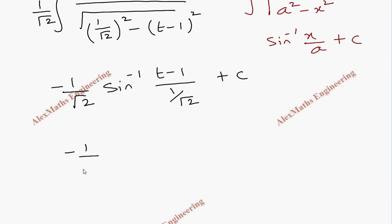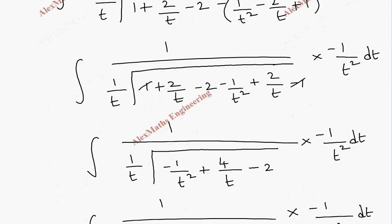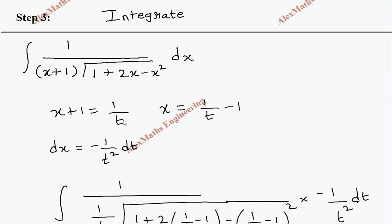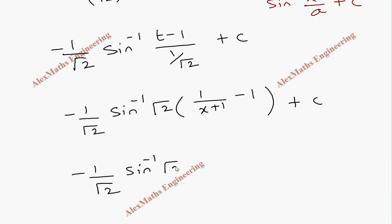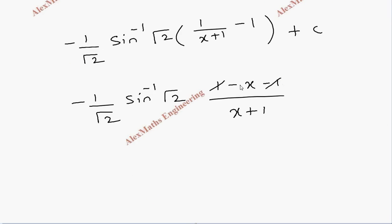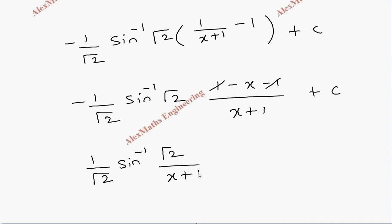Rearranging further, (t−1)/(1/√2) = √2·(t−1). Now back-substituting: since x+1 = 1/t, we have t = 1/(x+1). So t − 1 = 1/(x+1) − 1 = (1 − (x+1))/(x+1) = −x/(x+1). The minus signs cancel with the leading minus, giving the final answer: (1/√2) · sin⁻¹(√2 / (x+1)) + C.